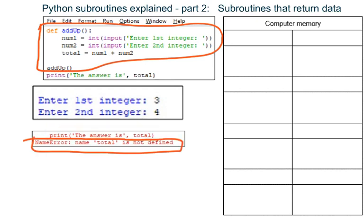The last line tells us the error happened because Python can't find a variable named Total. You might remember in the previous video we said that when Python reaches the end of a subroutine it destroys all the variables that were made inside the subroutine.